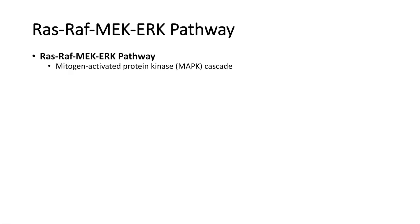So to begin, what is the RAS-RAF-MEK-ERK pathway? Well, this pathway is actually a mitogen-activated protein kinase, or MAPK cascade, or pathway. And this is actually one of four MAPK cascades in humans.